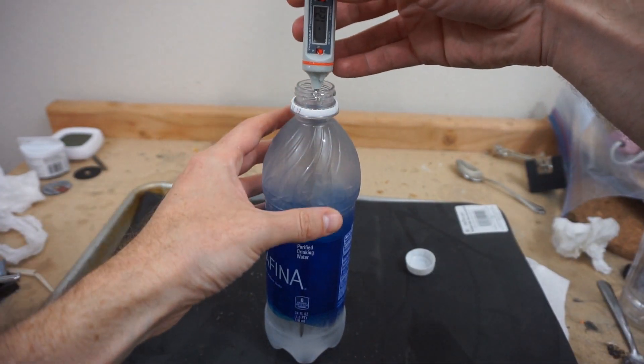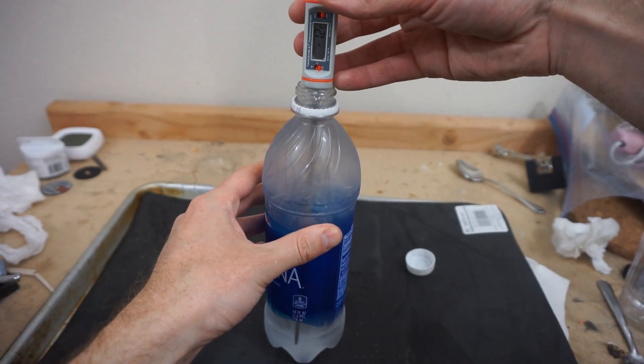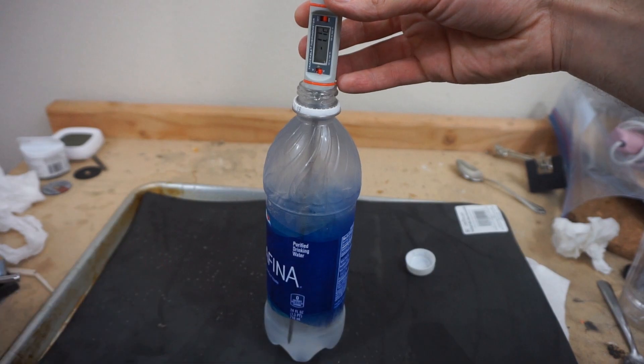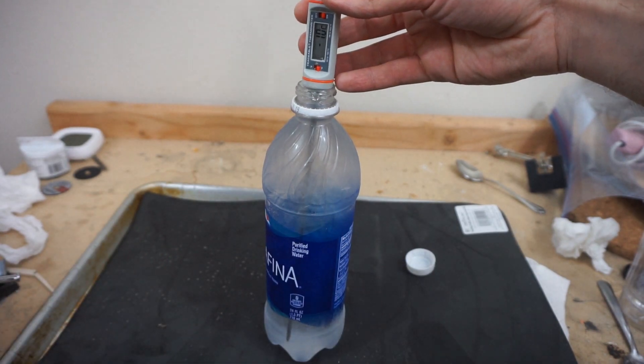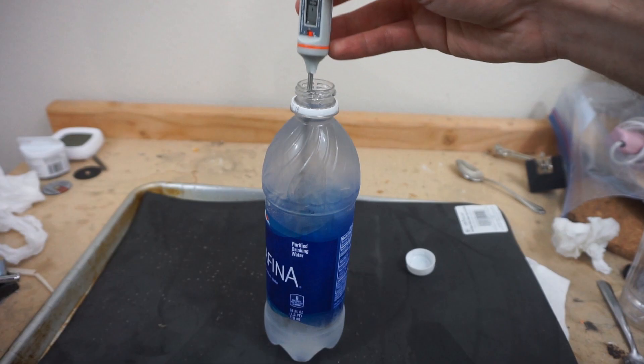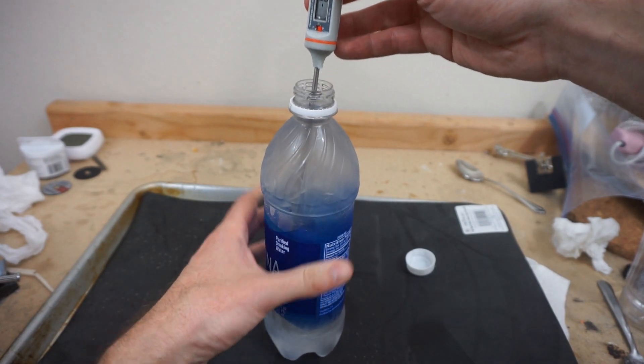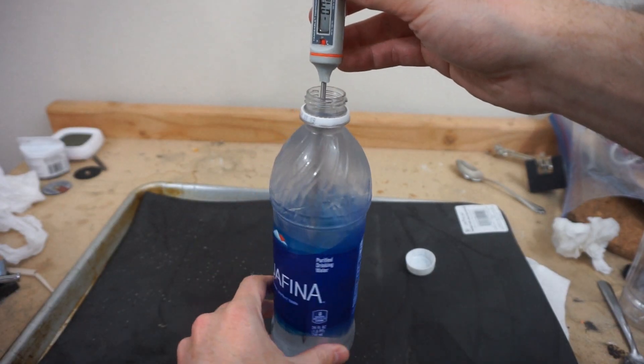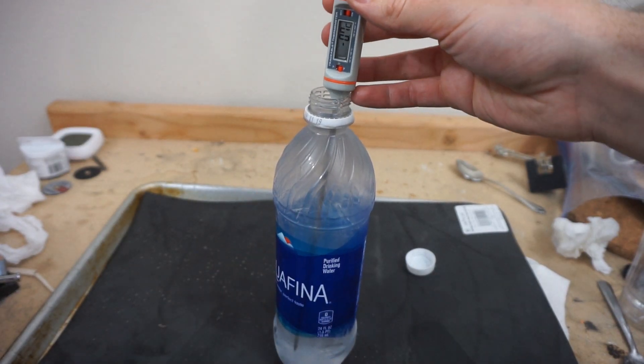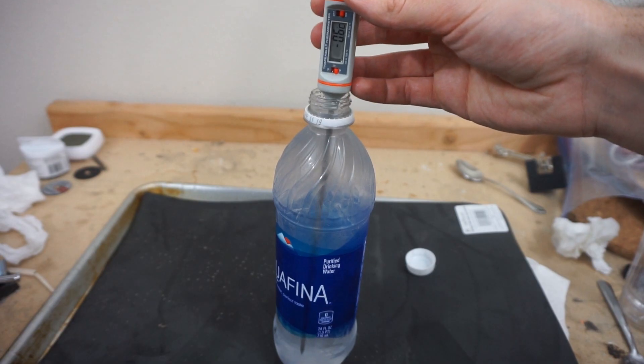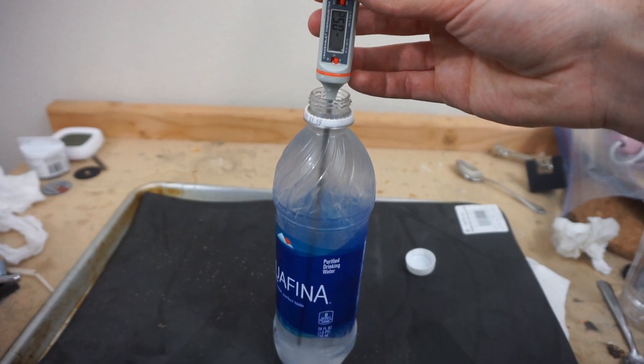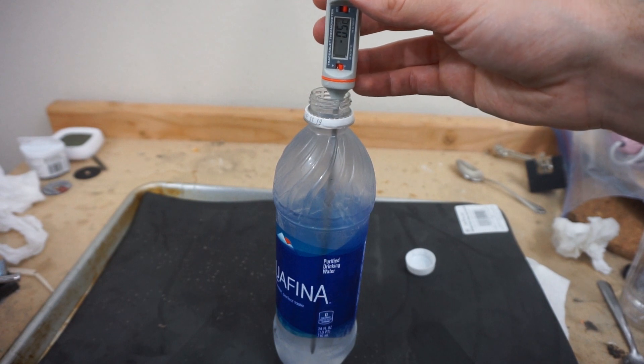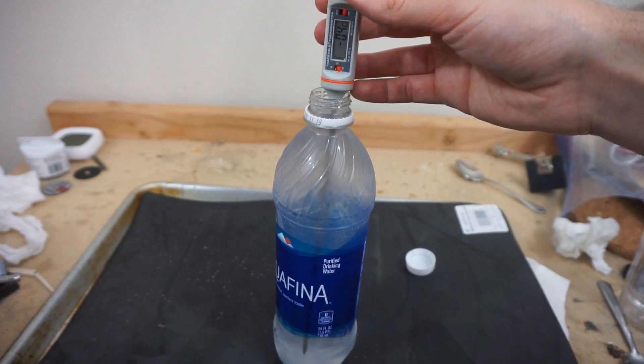Oh it froze. Okay, there it went. And the temperature is going up. So it was at negative 2.2, now it's going up. Only negative 0.9. So it's hard to see but it did freeze in there, and it's still going up a little bit. Negative 0.6. Negative 0.5. Negative 0.4.